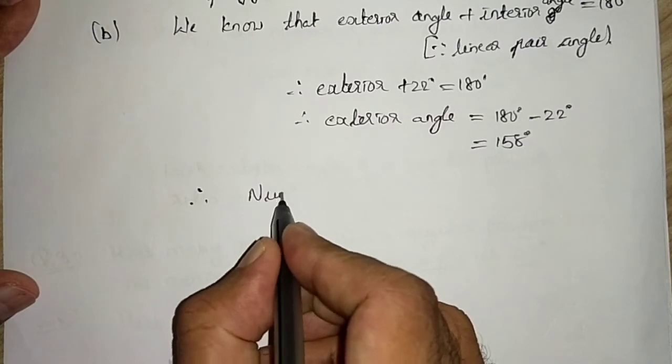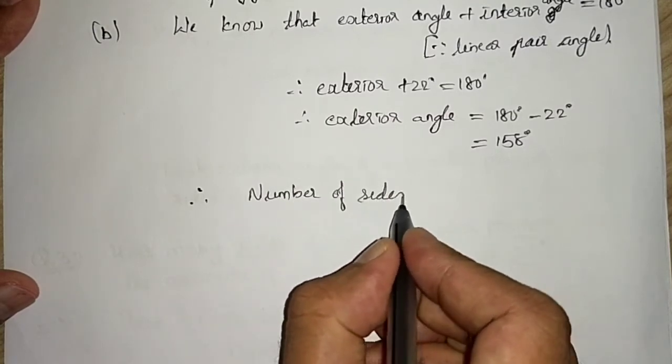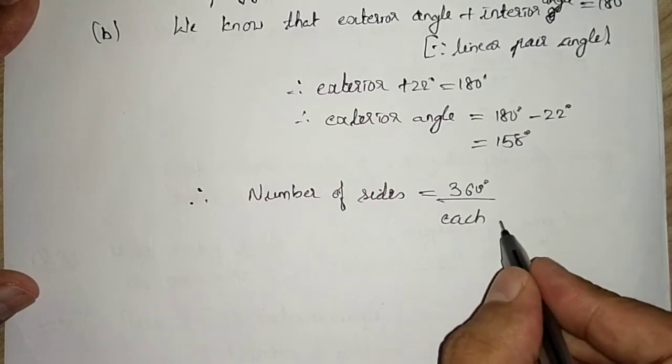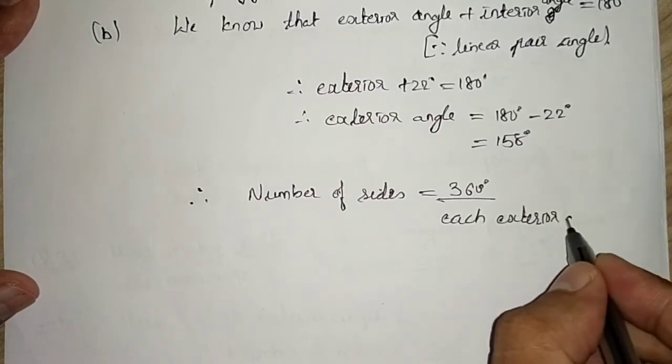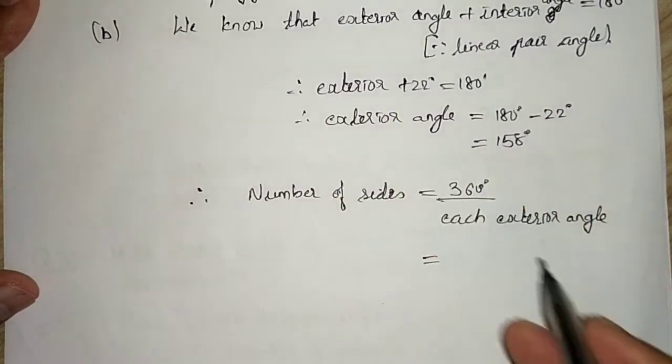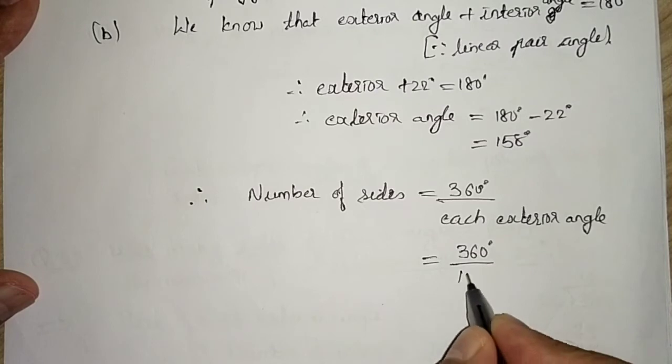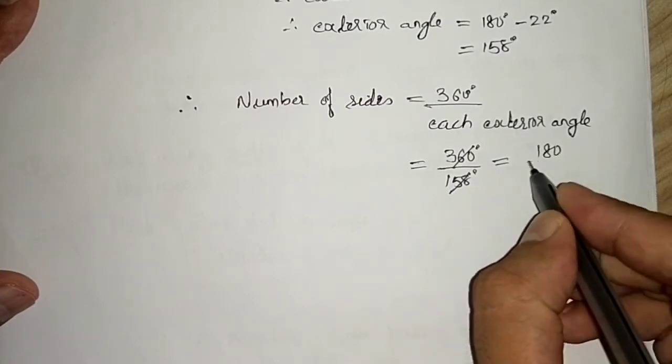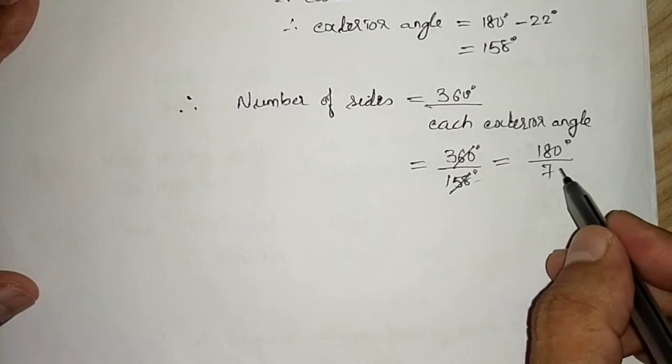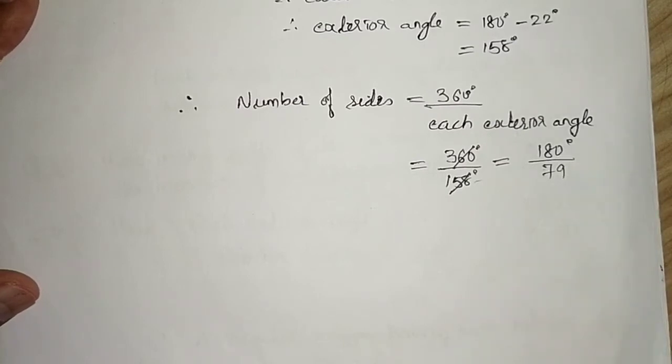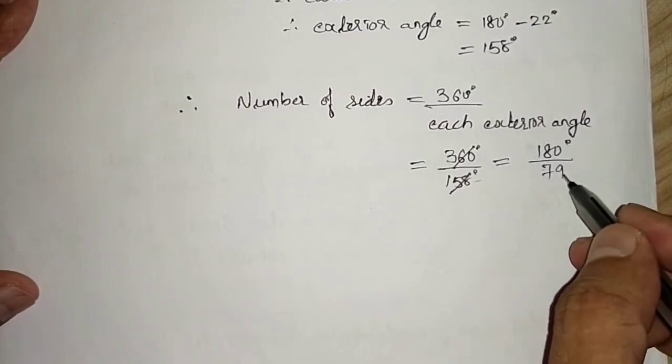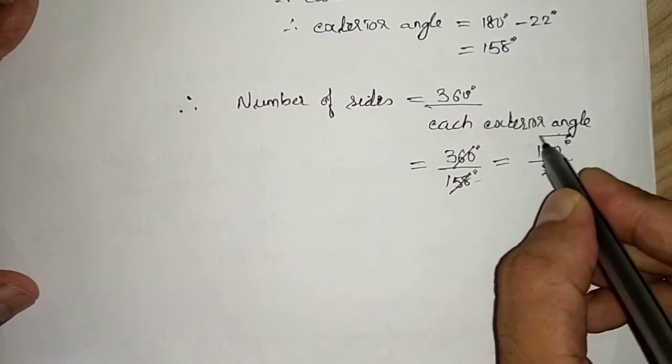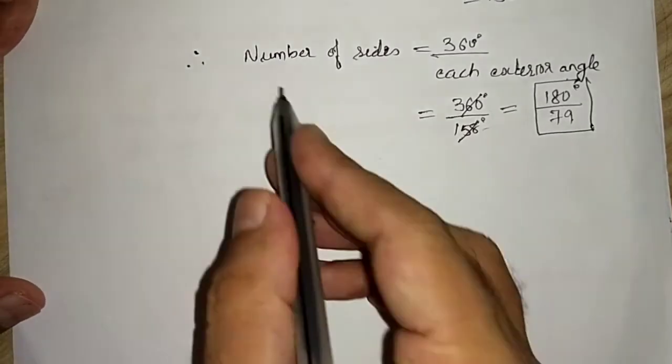Now putting it in formula. Number of sides equals 360 degrees divided by each exterior angle. So 360 divided by 158. Both of them go in 2: 2 times 158 is 180, and 2 times 79 is 158. Further division, if it is possible, let us see. 9 plus 7 is 16, so it is not possible to further divide. If you are dividing it further, you will get a decimal number. So number of sides are in fraction form.